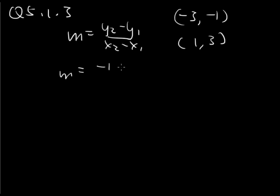So the slope is going to be negative 3 minus negative 1, so 3 plus 1. And here we have 1 minus negative 3, which is 1 plus 3. So 4 over 4, and the slope is 1.